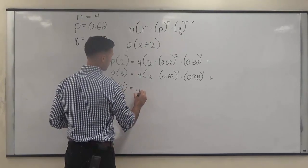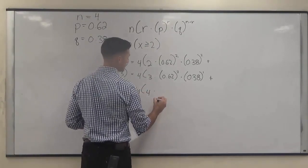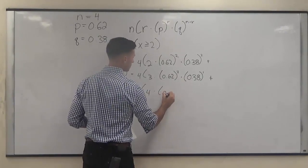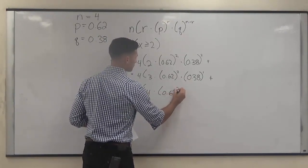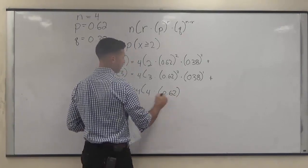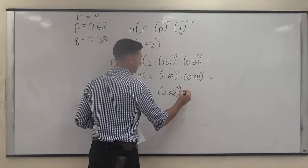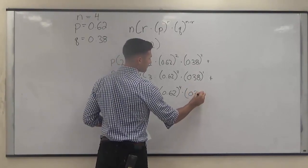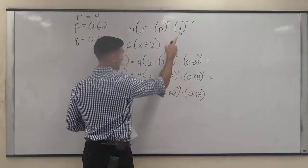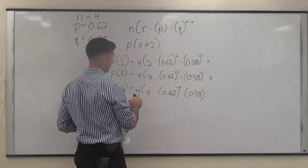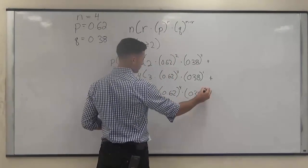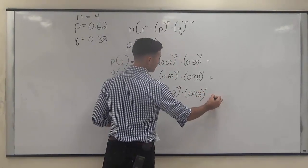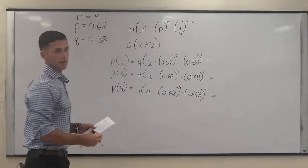Plus the probability of all 4, which is 4 choose 4 times 0.62 to the 4 times 0.38 to the 4 minus 4, which equals 0. Then you're going to add all these together.